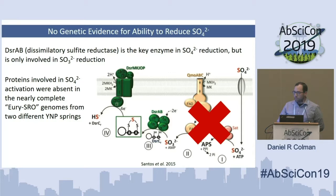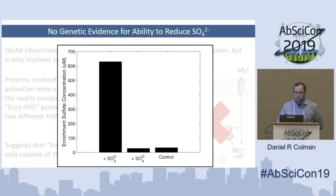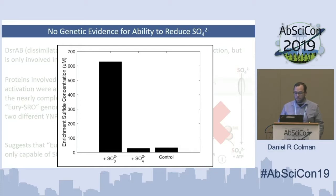These organisms appear to be lacking the capacity to activate sulfate and are probably only reducing sulfite. In fact, if we take sediments from MV2 spring and inoculate them with hydrogen as well as organic carbon like peptone, along with different oxidants including sulfite, sulfate, and unamended controls, we see that we get hydrogen sulfide production only with sulfite, indicating that this capacity is present in these native sediments.